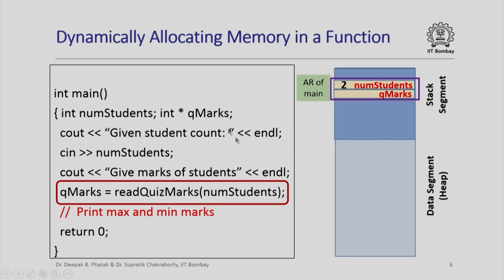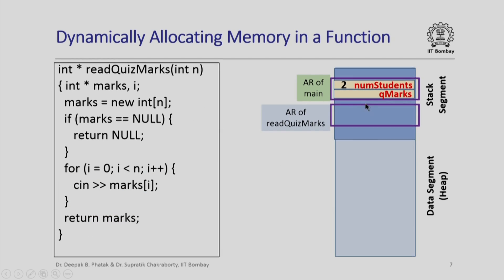Let us see how the memory layout might look as we execute this program. Here I have the stack segment and the data segment in main memory. When the main function is called by the operating system, its activation record will be in the call stack in the stack segment. Each of the local variables of the main function will be present in this activation record. Let us say we have now read in the value of num_students as 2. The value of q_marks is still uninitialized and contains some garbage value.